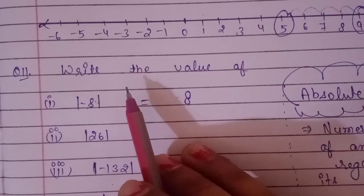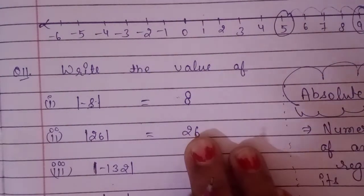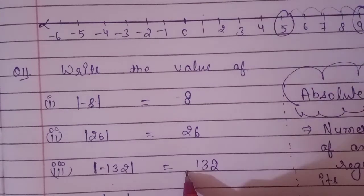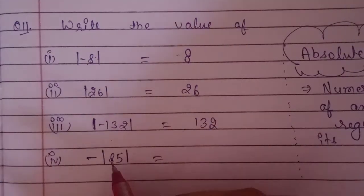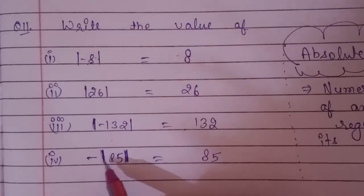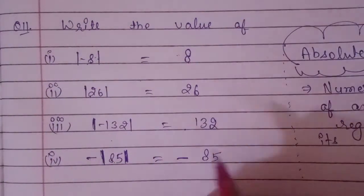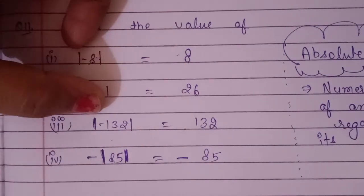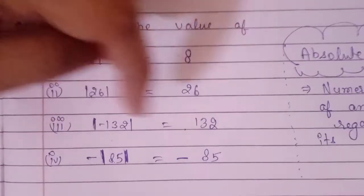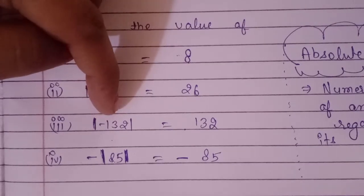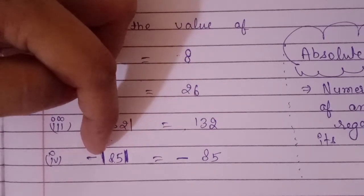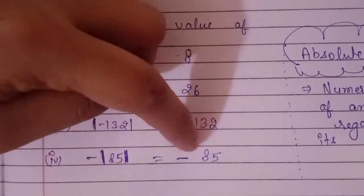When writing absolute value, always ignore the sign. For example: |26| returns 26. For |-132|, I write only the numeric value — 132. Now for -|85|: the minus 85 inside the modulus gives 85 when the sign is removed, but the minus sign is outside the modulus, not inside. So that minus sign remains, giving -85.